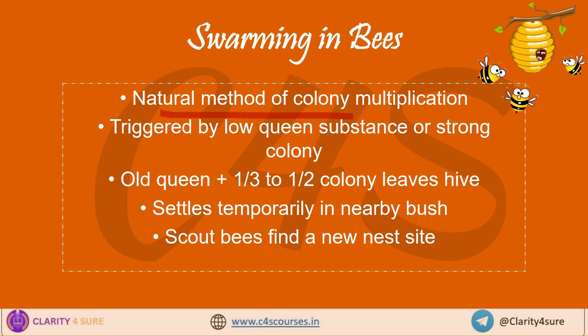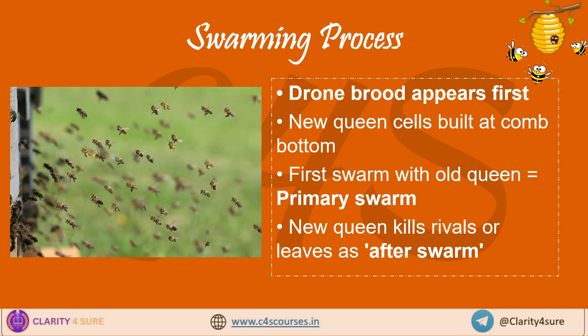In detail, swarming is initiated when the old queen and one third to half of the colony leaves the hive. They settle temporarily in a nearby bush. Then scout bees go and find a new suitable location to establish. In this way the colony is multiplied. When the new queen bee hatches, she usually kills the other developing queens still inside their cells. But sometimes she doesn't — in that case she leaves the hive with some bees, forming an afterswarm or cast. The first swarm with the old queen is called the primary swarm, and the afterswarm is formed when the new queen leaves after killing or leaving rivals.